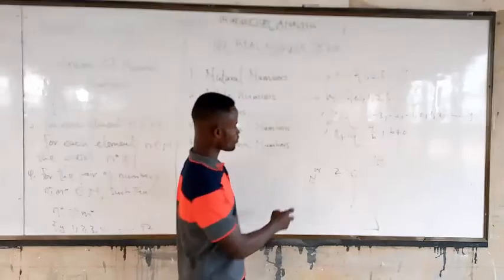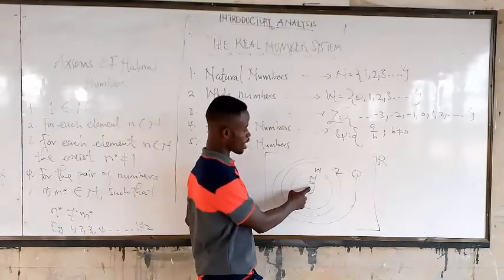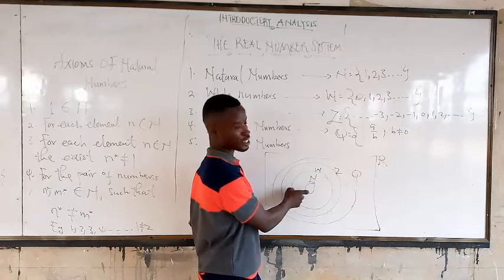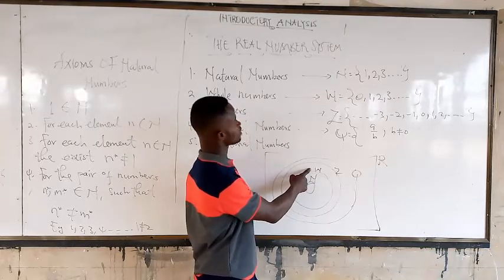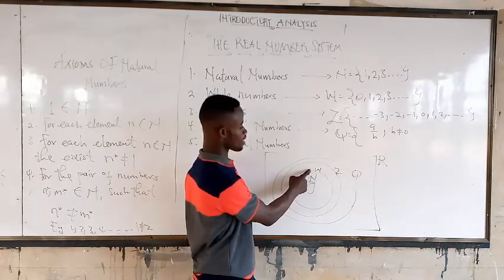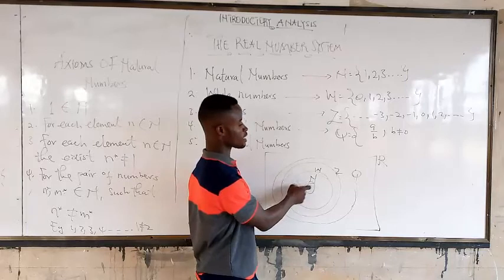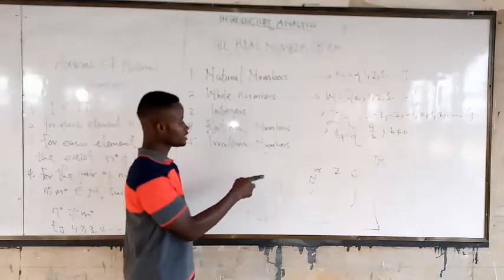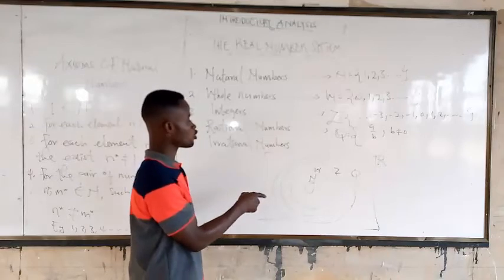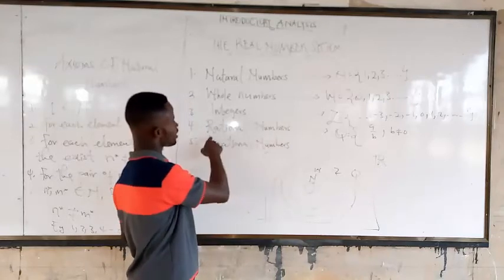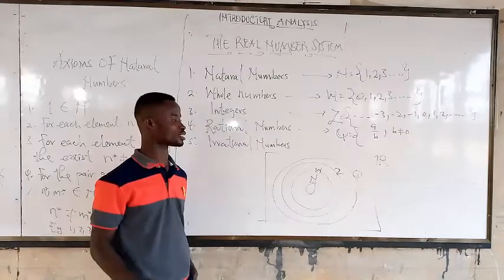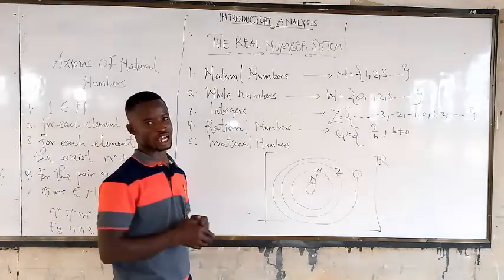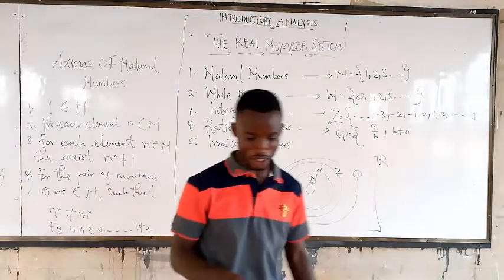We have the natural numbers. The natural numbers are a subset of the whole numbers. The whole numbers and natural numbers are a subset of the integers. And the integers, whole numbers, and natural numbers are also a subset of the rational numbers.